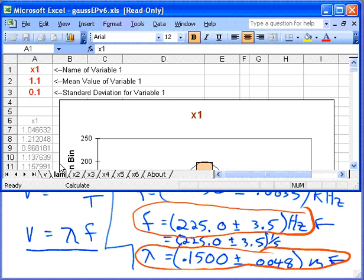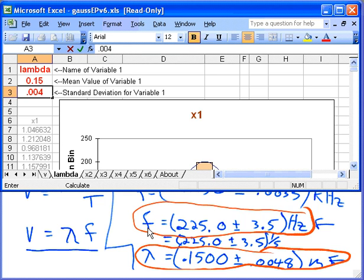Lower case lambda, return, lambda, return. The value of lambda is 0.15 and the error, let's type in 0.15, return. The uncertainty is 0.0048 with lambda in meters.